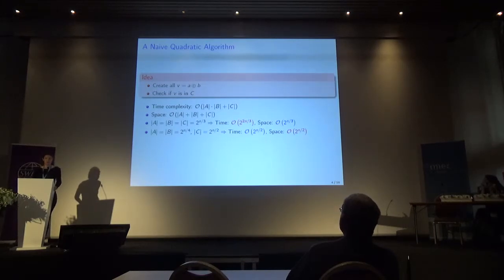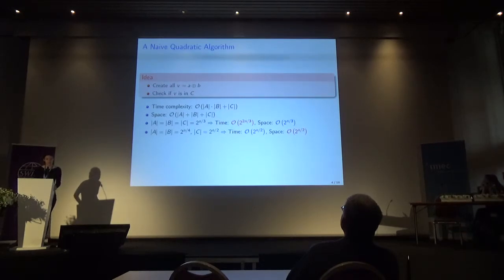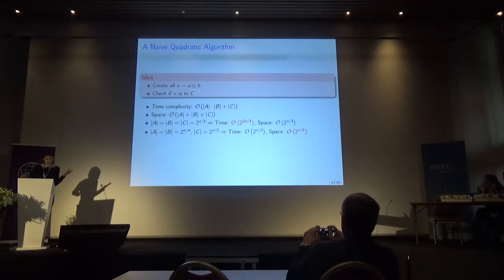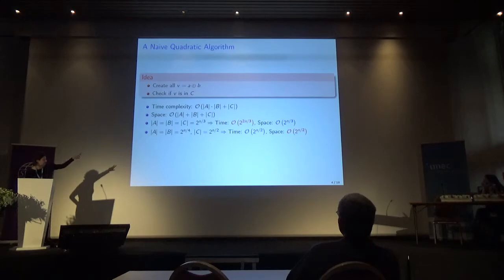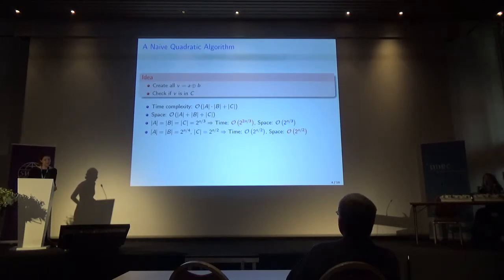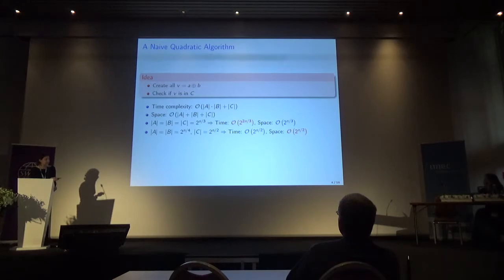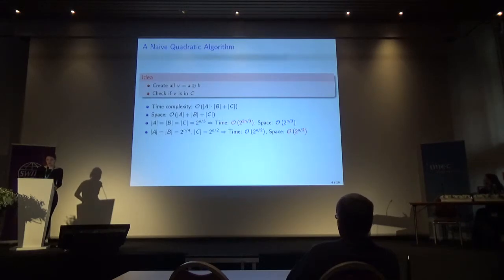If we choose the lists to have the minimum size — that is 2 to the n over 3 — so that we have a solution with high probability, then the time complexity of the procedure will be quadratic in the size of the list. We can also choose to reduce A and B and make more queries for C, so that there will still be a solution with high probability. With this choice of list size, we can reduce the time complexity to 2 to the n over 2, at the cost of increasing the space complexity.